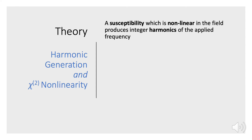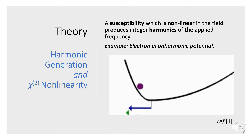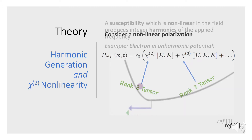Looking at theory, let's start with a chi-2 nonlinearity. Susceptibility, which is nonlinear in the electric field, will produce integer harmonics of the applied frequency. You can understand this by looking at a simple animation. Suppose an electron is in an anharmonic potential and exposed to an electric field oscillating at some fundamental frequency. The Fourier series of its motion will be that fundamental motion plus higher-order terms. The next higher term oscillates at twice the frequency, and that double-frequency oscillation of the electron will generate electric field emissions at twice the frequency.